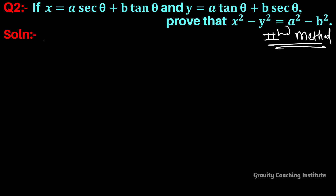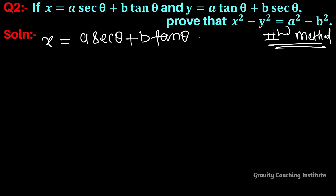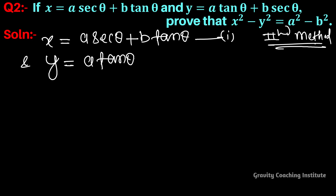Given: x = a·sec θ + b·tan θ — call this equation 1, and y = a·tan θ + b·sec θ — call this equation 2.